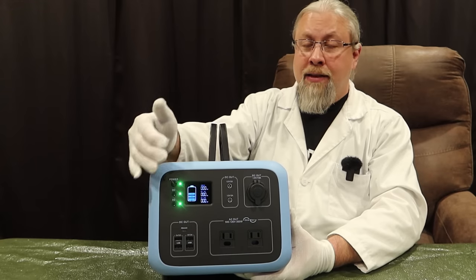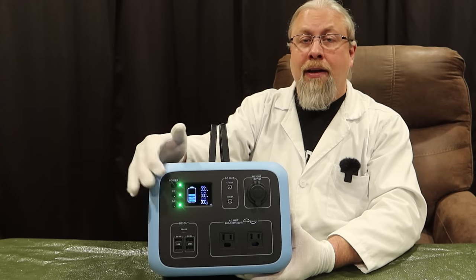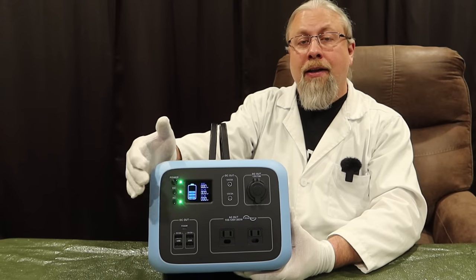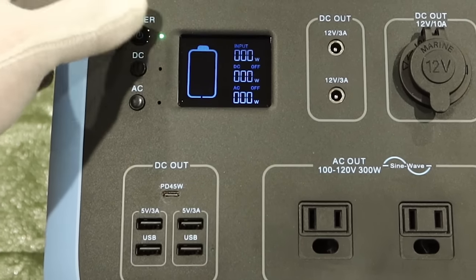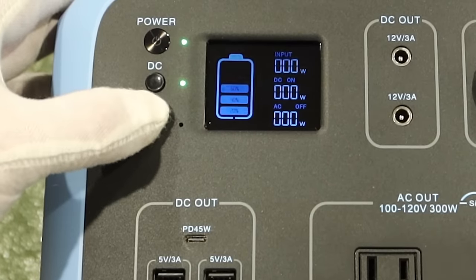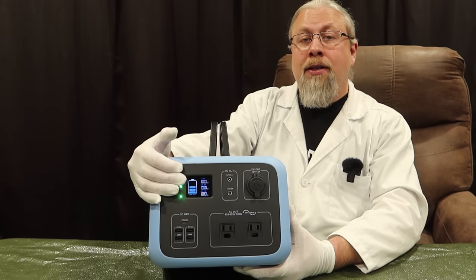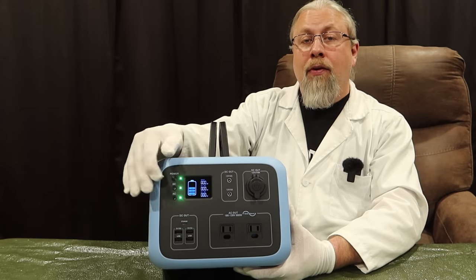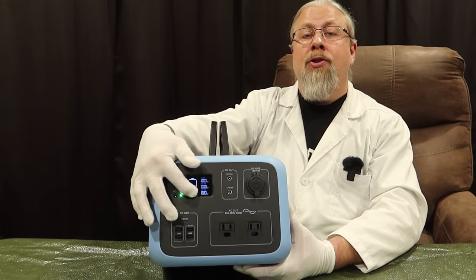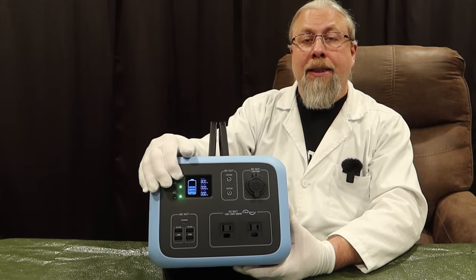As for the display, this does offer the typical display you'll find in a lot of Bluetti products. It has the five segment battery icon that shows you the level of the battery, and it also gives you power meters for input and output wattage. The meters also double as error displays, so if you go over temperature or voltage or wattage, these actually will show up error codes which you can look up in the book.